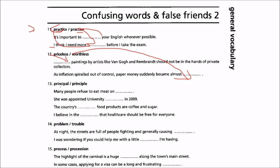Principle and principal — very important. Many people refuse to eat meat on principle — here we use 'principle', meaning your ideals, your thoughts, and what you have decided. She was appointed university principal — for this you use 'principal', because it is a post or position.